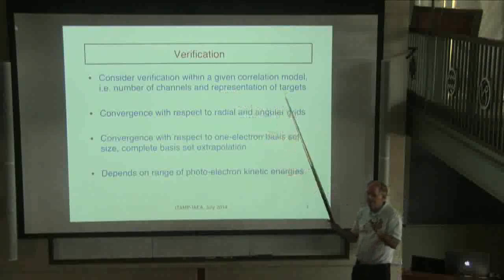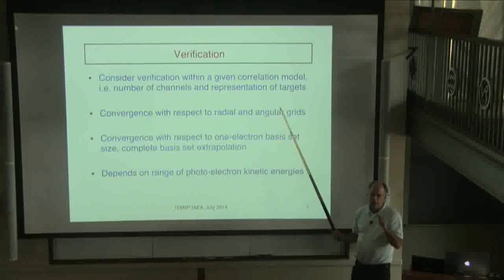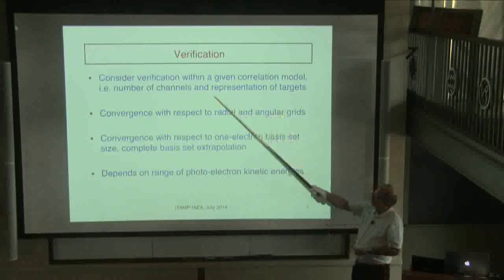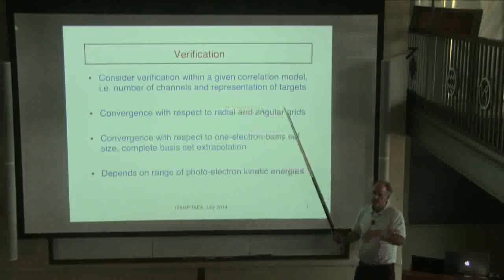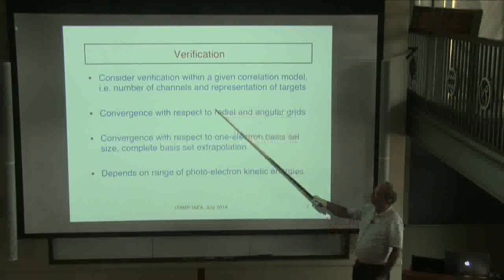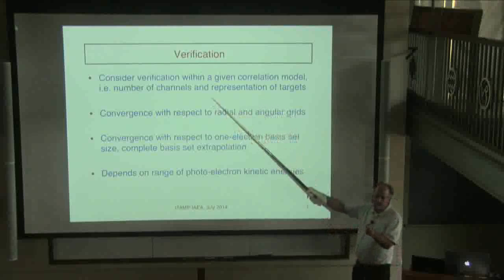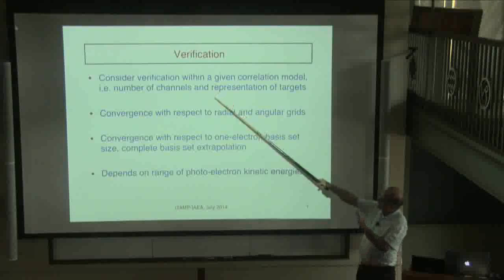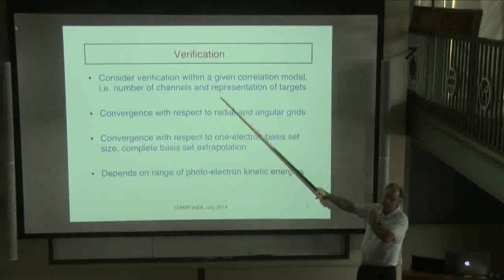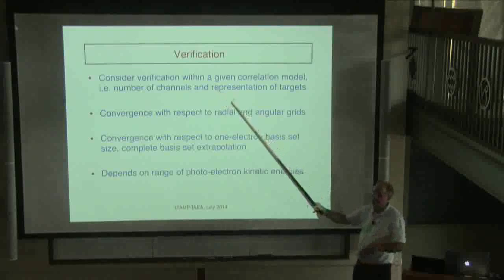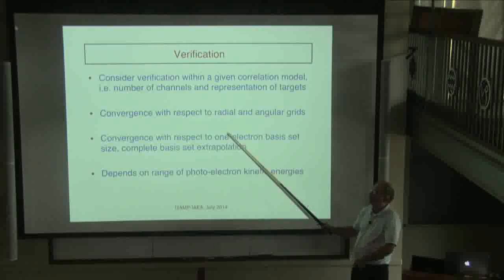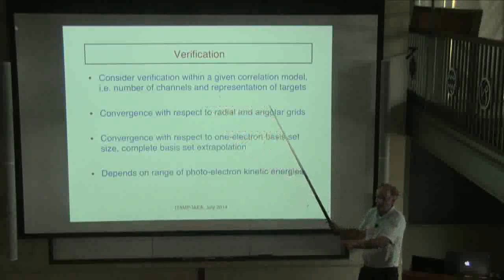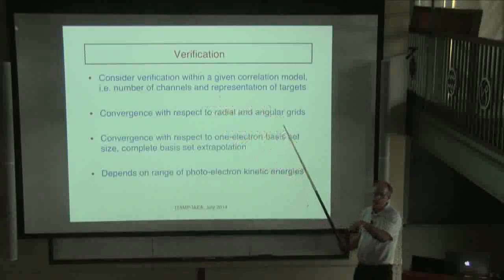The quantum chemists have developed complete basis set extrapolation methods, where in your one-electron basis set you can use triple zeta, quadruple zeta, however many zetas you can put in, and then use some sort of extrapolation technique to go to the infinite basis set limit. By separating the continuum part and basically solving that exactly, the continuum electron does not depend upon how big your basis set is used to represent the bound orbitals. Then you can, in principle, much more easily apply these extrapolation techniques to the one-electron basis set part in the bound part of the problem.